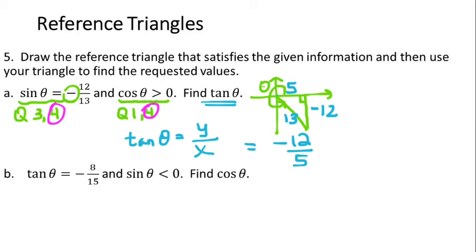For part B, we again start by figuring out which quadrant our angle is in. We're told that tangent of theta is negative 8 over 15 — importantly, tangent theta is negative, which is true in quadrants 2 and 4. We're also told sine theta is less than 0, meaning sine is also negative, which is true in quadrants 3 and 4. So the one quadrant where both conditions are true is quadrant 4, giving us another quadrant 4 triangle.